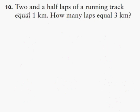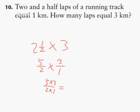Question 10 says: 2 and a half laps of a running track equals 1 kilometer. How many laps equals 3 kilometers? Since every kilometer is 2 and a half laps, 3 kilometers would be 2 and a half times 3 — that's 5 halves multiplied by 3 over 1. Multiplying numerators and denominators gives 15 over 2, which is 7 and a half. Therefore, 7 and a half laps equals 3 kilometers.